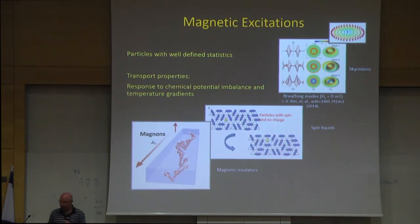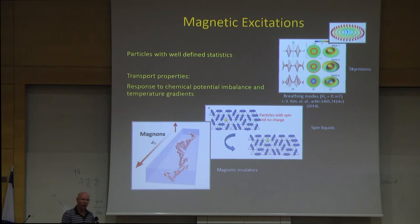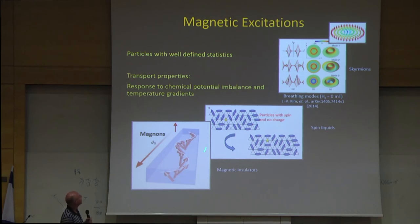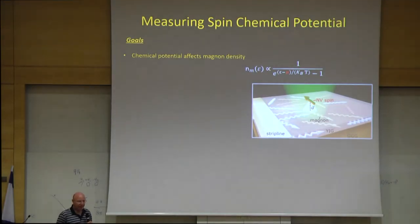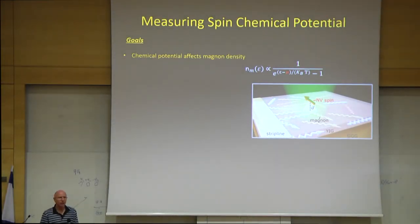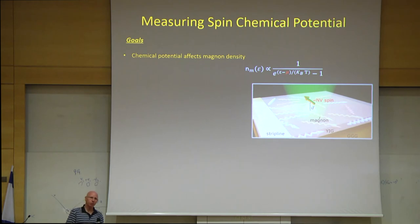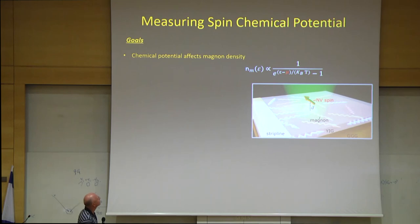I'd like to move to the second topic and spend the remaining time on excitations. Whereas we've been discussing static configurations of magnetic textures, I'd like to discuss excitations — in an insulator these are magnons. What can we learn about magnons using our magnetometers? Magnons are excitations, and we'd like to study their transport. For that, we need to know their chemical potential. If we have the chemical potential and can induce gradients, we can in principle learn about their conductance.